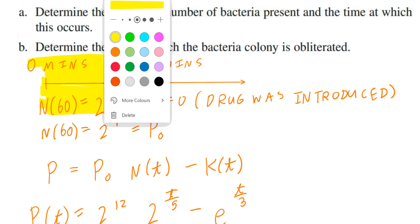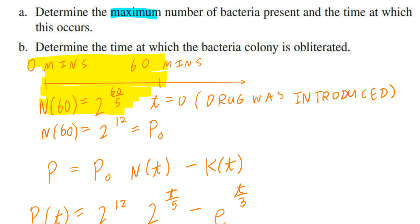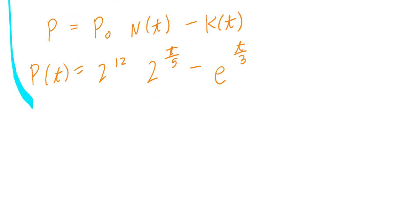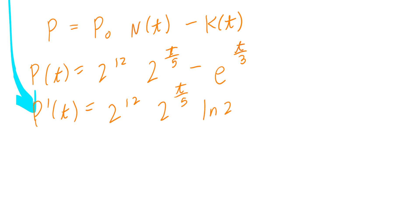To find the maximum or minimum — also known as critical points — the three major steps are: take the derivative, set it to zero, and solve for t. The keyword here is maximum. To find the maximum, take the derivative: P prime of t equals 2 to the power of 12 times the derivative of 2 to the power of t divided by 5, which is 2 to the power of t divided by 5 times ln of 2 times 1 divided by 5.